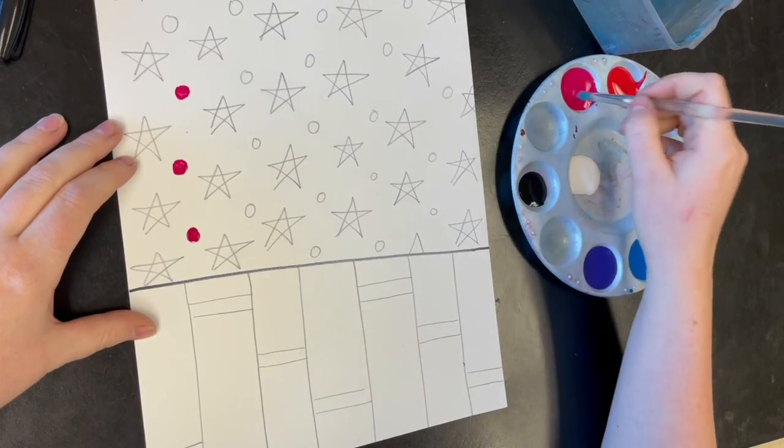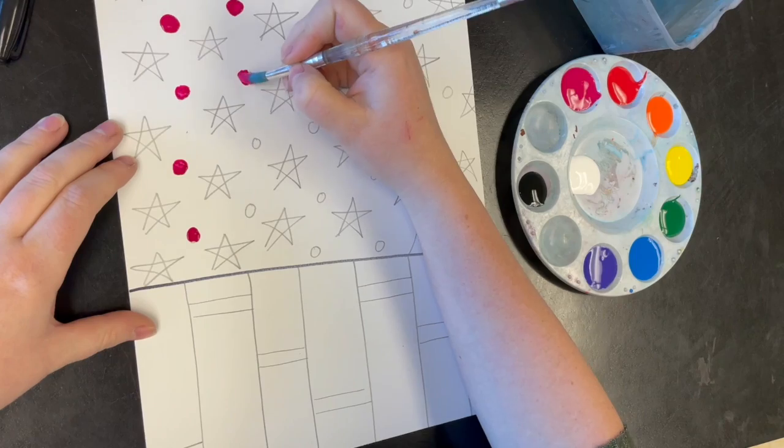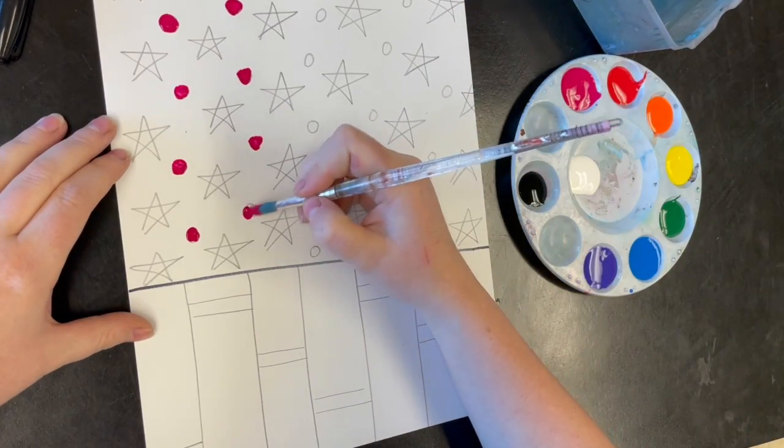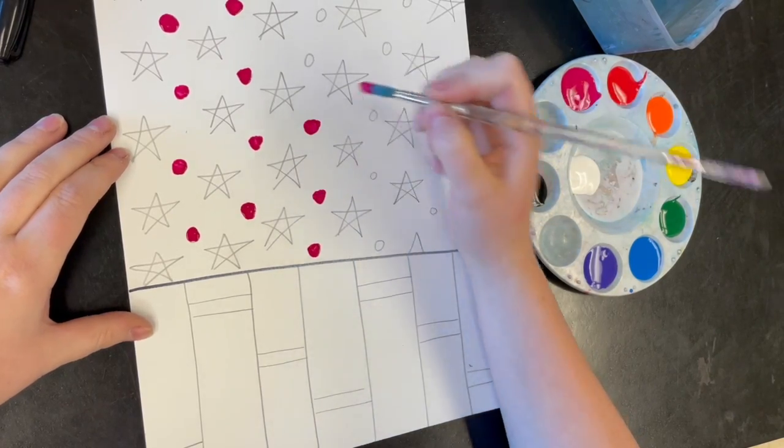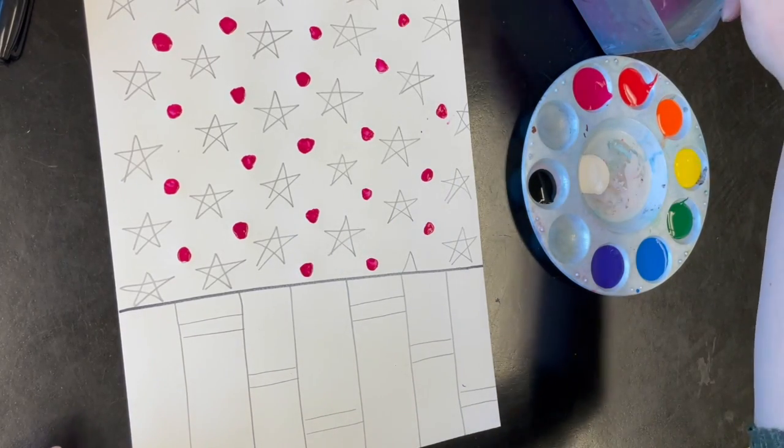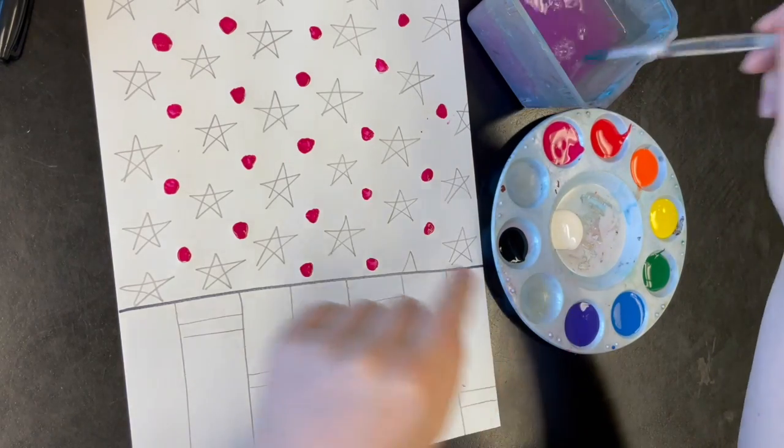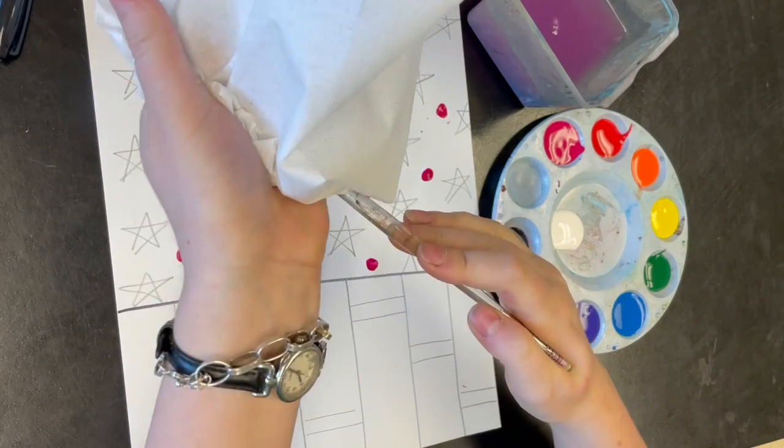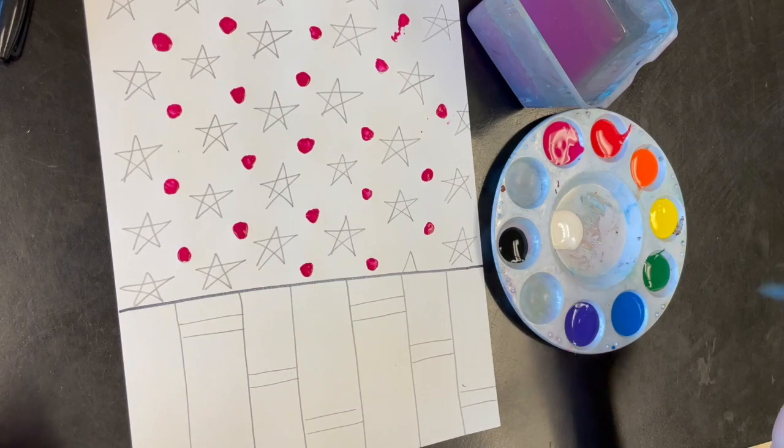I'm just going to fill it in. When you're ready to change colors you need to rinse it off in the water. We don't want to add any water to these paints, so before I pick a new color I'm going to dry my paintbrush off on the paper towel, and then I can pick a new color.